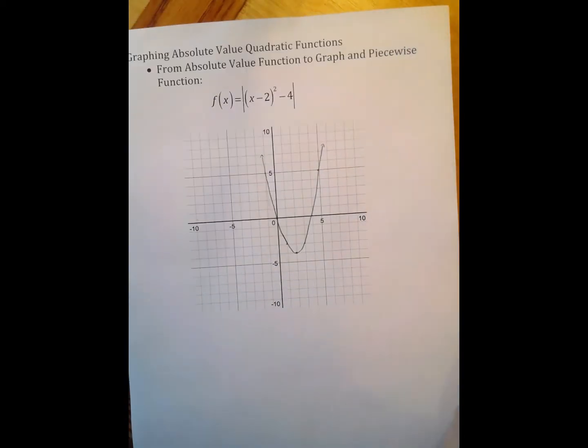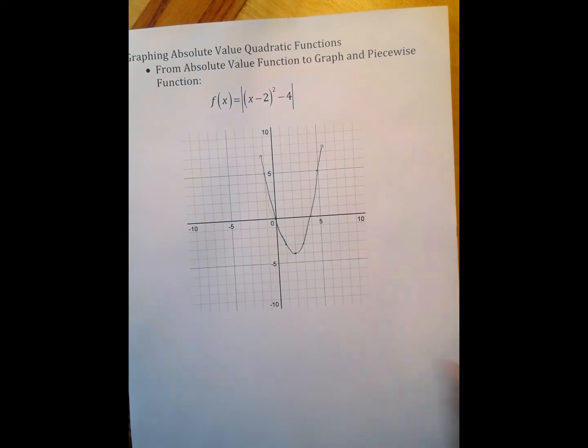Now I have to worry about the absolute value piece of this. So remember, absolute value means distance from zero. And we only ever talk about distance in terms of positives. You don't say to your friend, go negative 5 feet. You say to your friend, go 5 feet to your left, your right, forwards, backwards. But we don't use negatives.